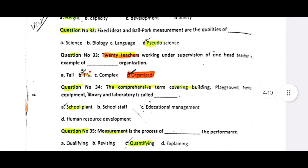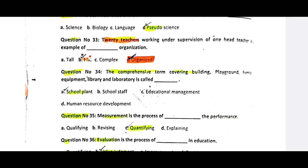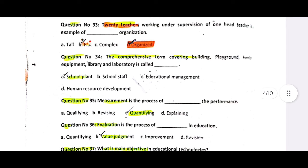The comprehensive term covering buildings, playground, equipment, and library is called school plant or school plan. This includes human resources development. Measurement is the process of quantifying performance — it involves assigning quantities to observations.